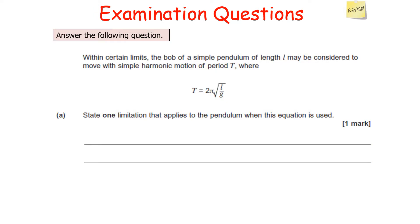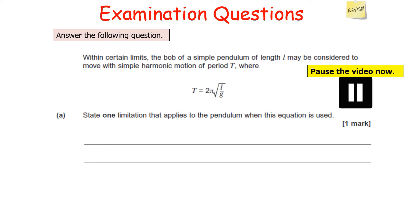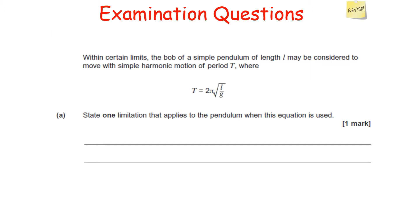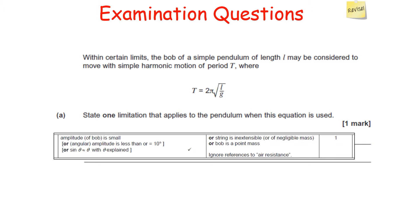Next question: the bob of a simple pendulum of length L may be considered to move with simple harmonic motion of period T, where T = 2π√(L/g). State one limitation that applies to the pendulum when this equation is used. The key assumptions for a simple pendulum include: the string is inextensible, the bob is a point mass, but most commonly — the amplitude of the oscillation is small, specifically 10 degrees or less, because the small angle approximation is being used.